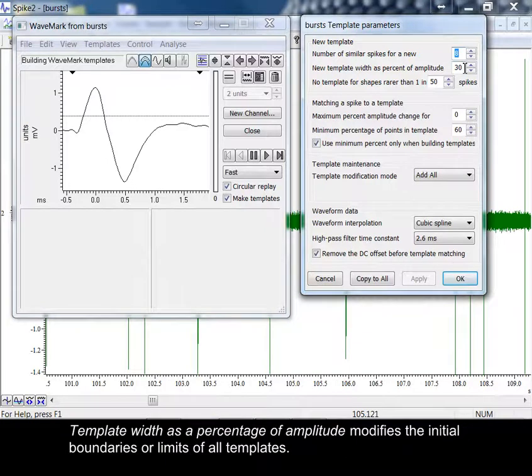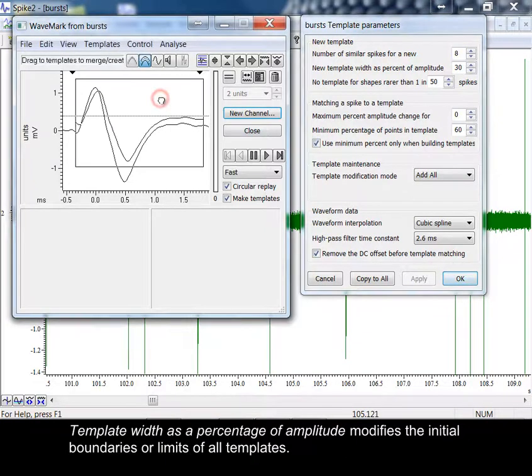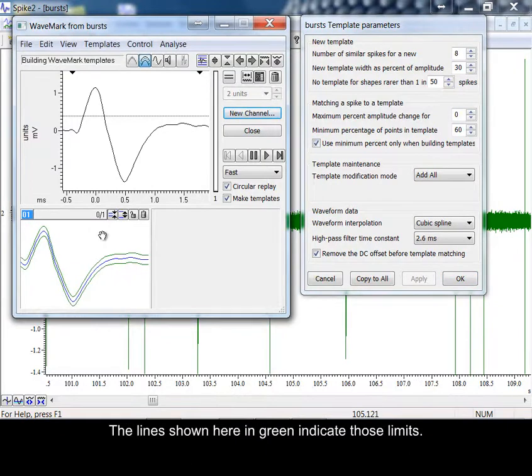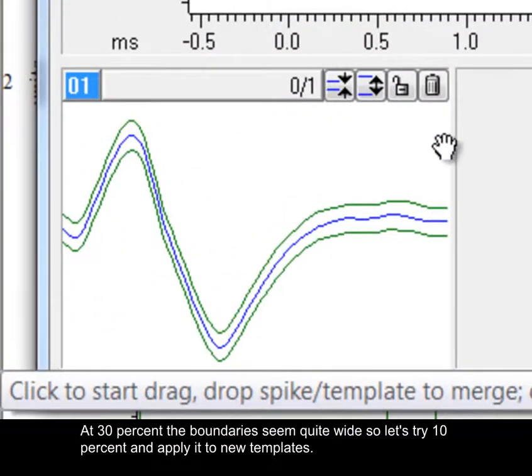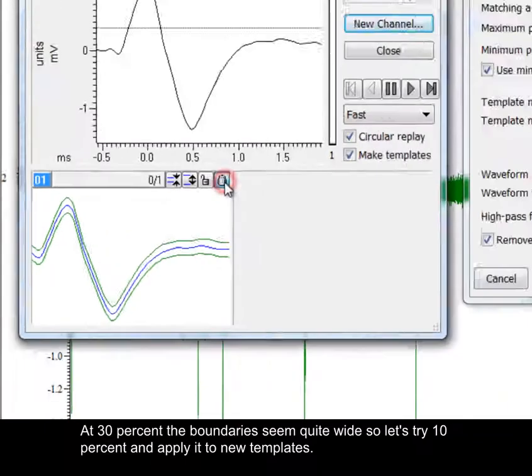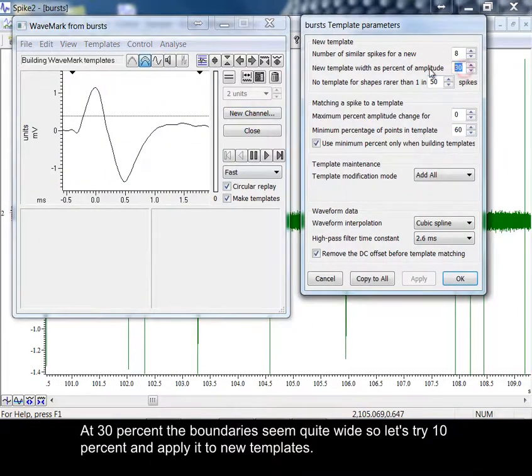Template width as a percentage of amplitude modifies the initial boundaries or limits of all templates. The lines shown here in green indicate those limits. At 30%, the boundaries seem quite wide, so let's try 10% and apply it to new templates.